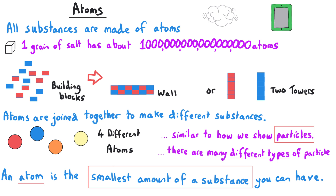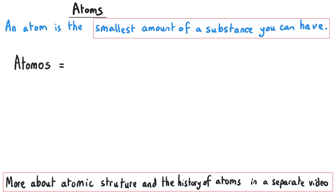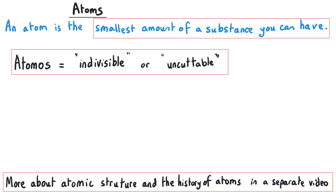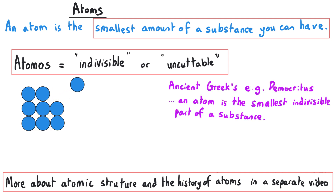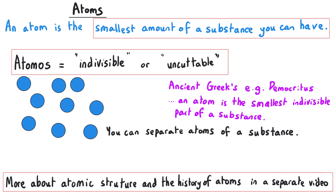Atoms are usually thought of as the smallest amount of any particular substance that you can have. The word atom actually comes from the ancient Greek word 'atomos', which means uncuttable or indivisible. This reflects the early philosophical idea that an atom was the smallest indivisible particle of matter, a concept proposed by the Greek philosopher Democritus, and this term was later adopted into scientific language as the basic unit of a chemical element.